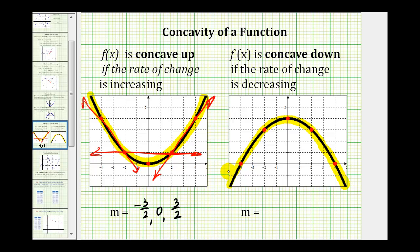And then again, if we did the same thing and found the average rates of change through these two points, these two points, and these two points, the slopes of these lines would be positive three halves, zero, and negative three halves. And notice now, the average rates of change are decreasing, and the function is concave down.